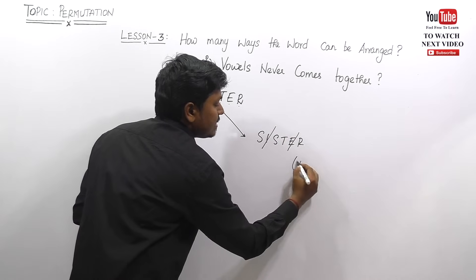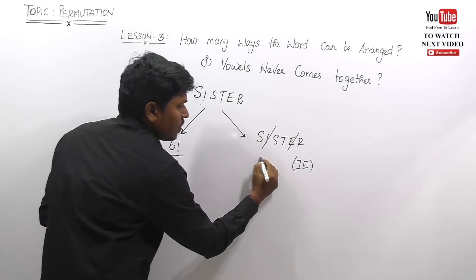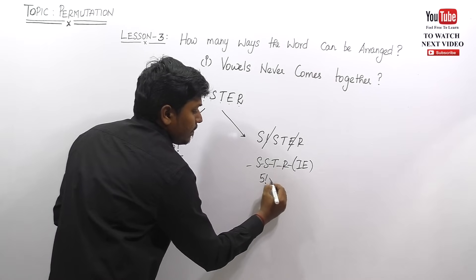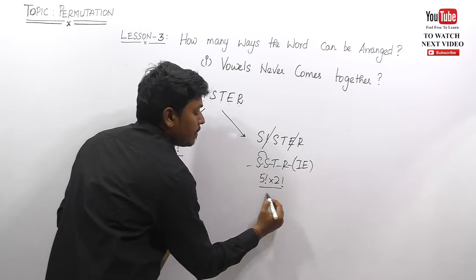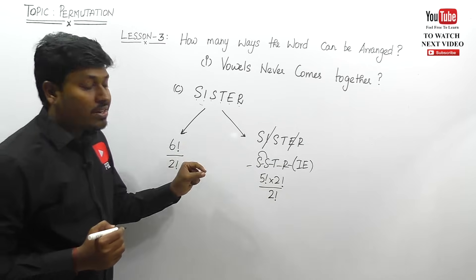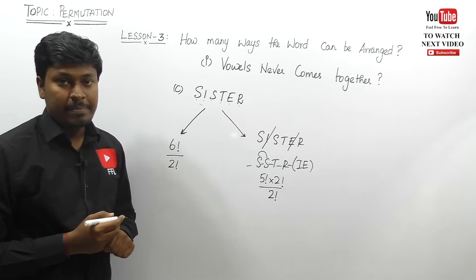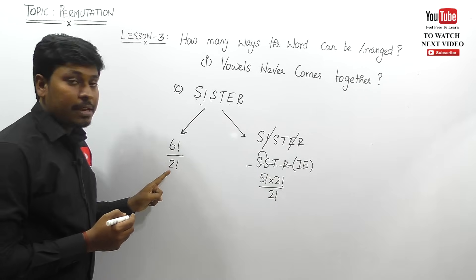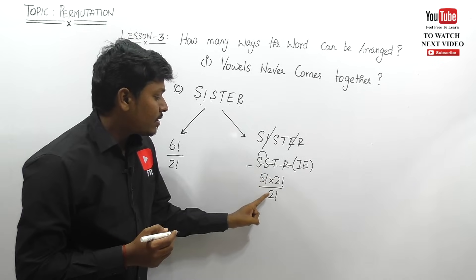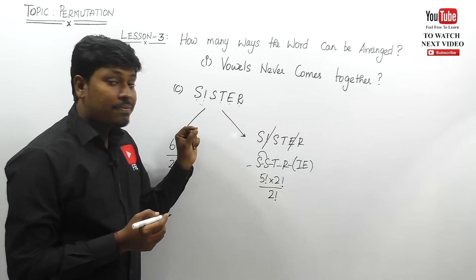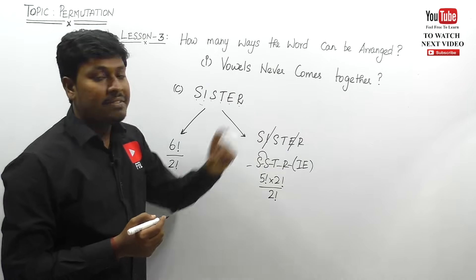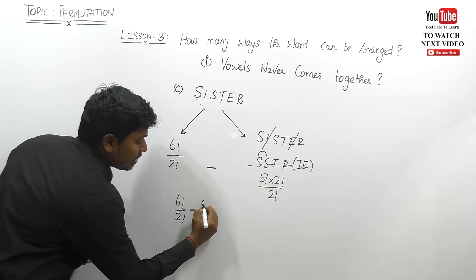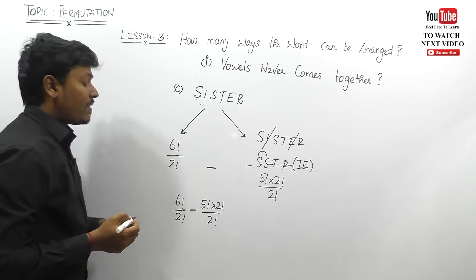For lesson two — vowels come together — the vowels in SISTER are I and E. Place them inside a bracket and write the remaining consonants: S, S, T, R. Count gaps: one, two, three, four, five — so five factorial. There are two vowels arranged in two factorial ways. Since S is repeated twice, divide by two factorial. So vowels-together = five factorial × two factorial ÷ two factorial. Final answer: six factorial ÷ two factorial minus five factorial × two factorial ÷ two factorial.